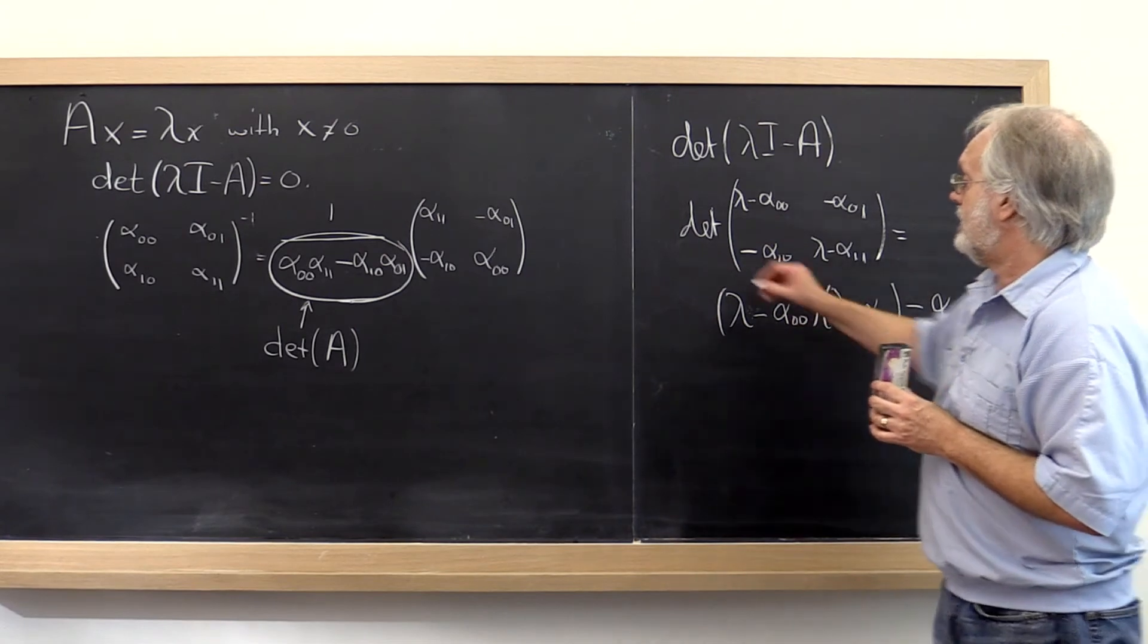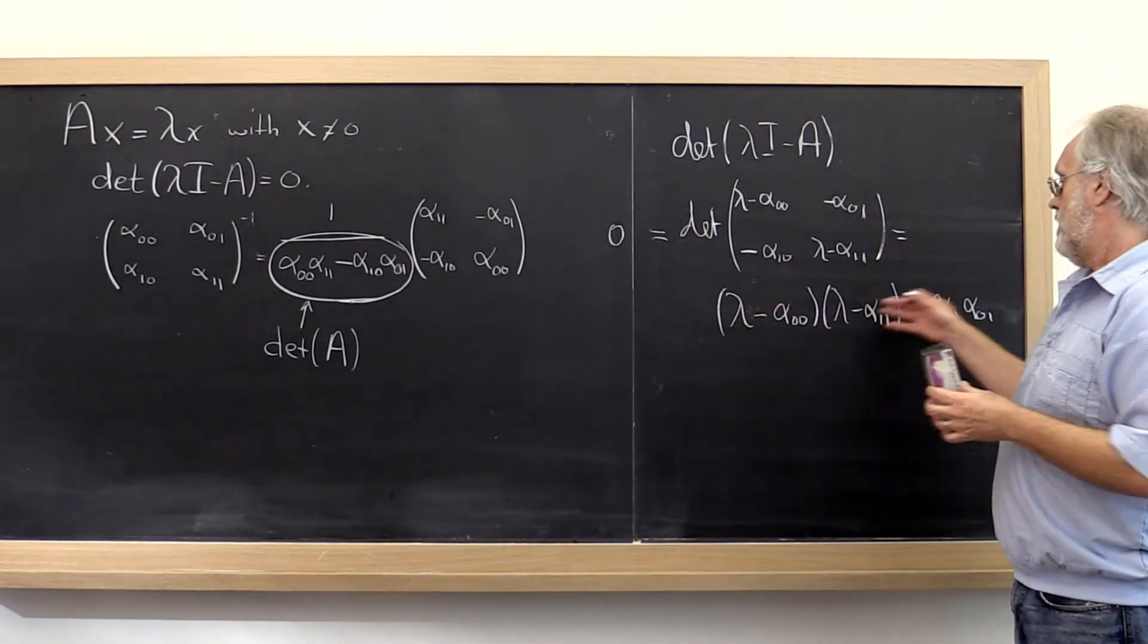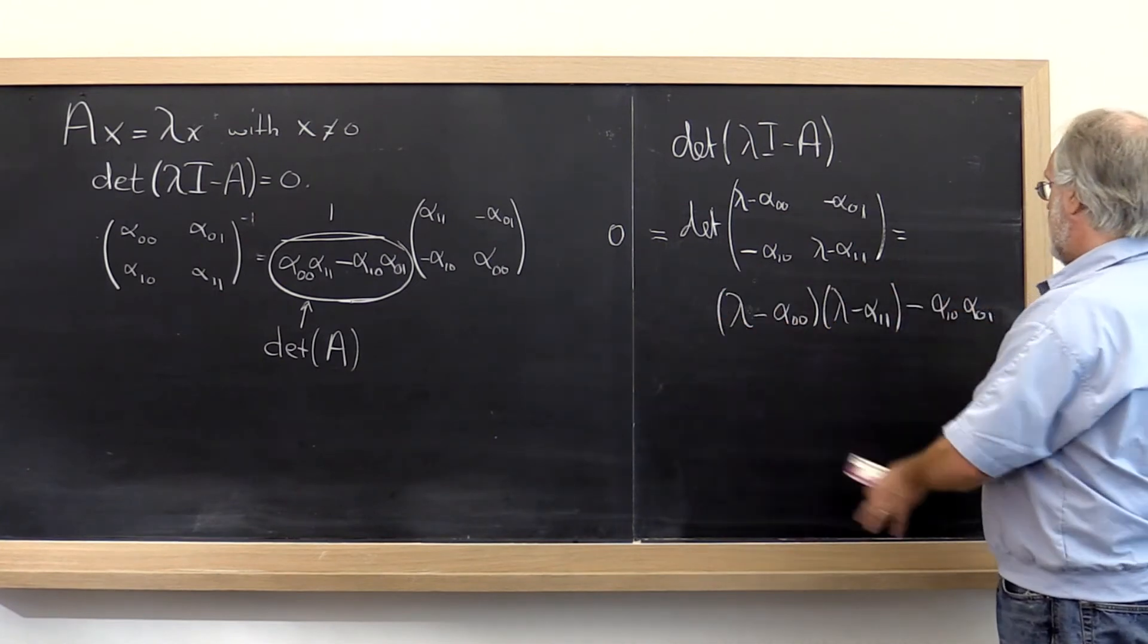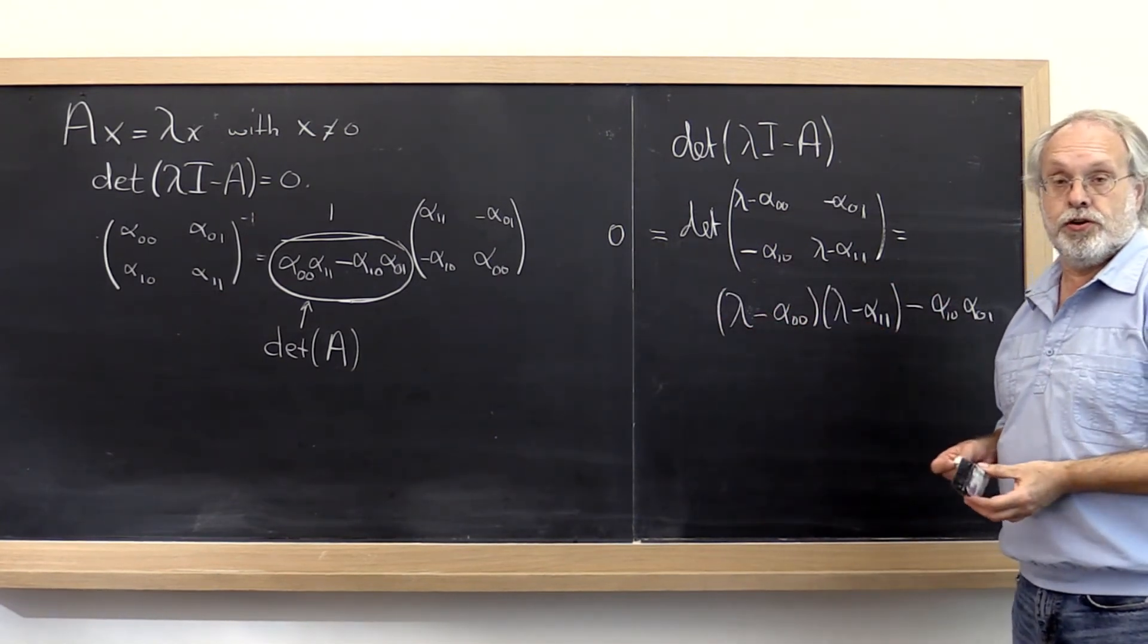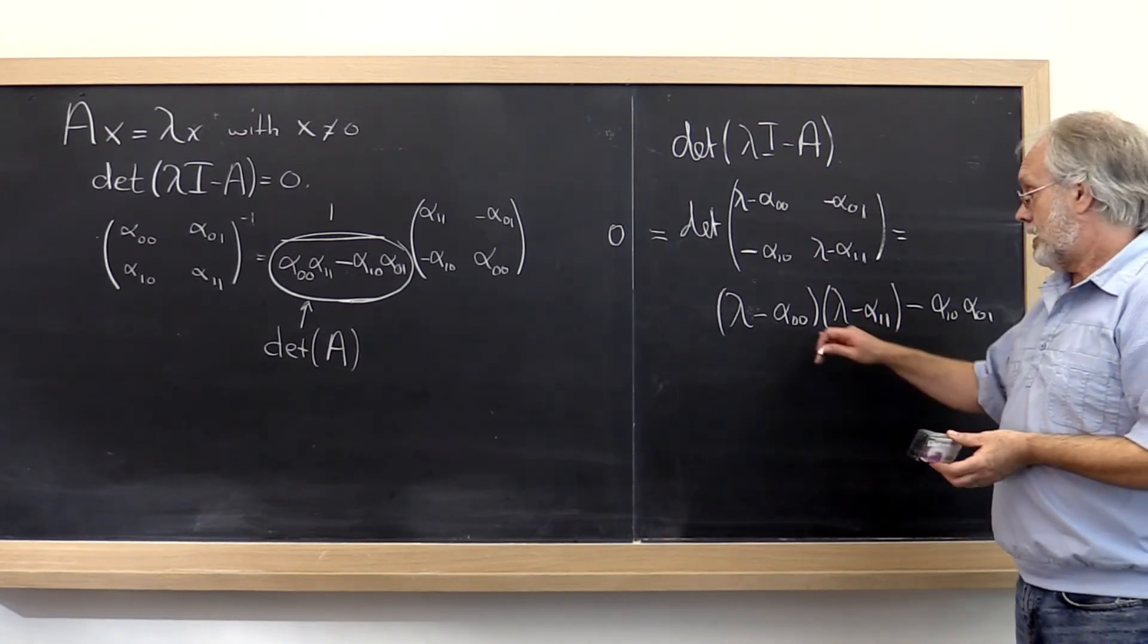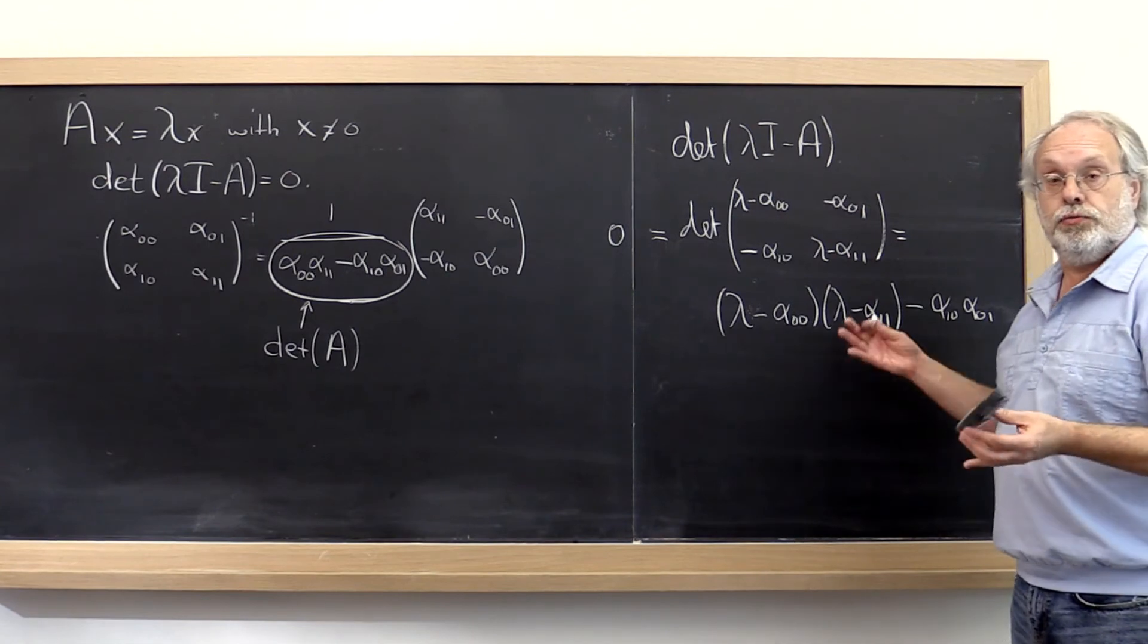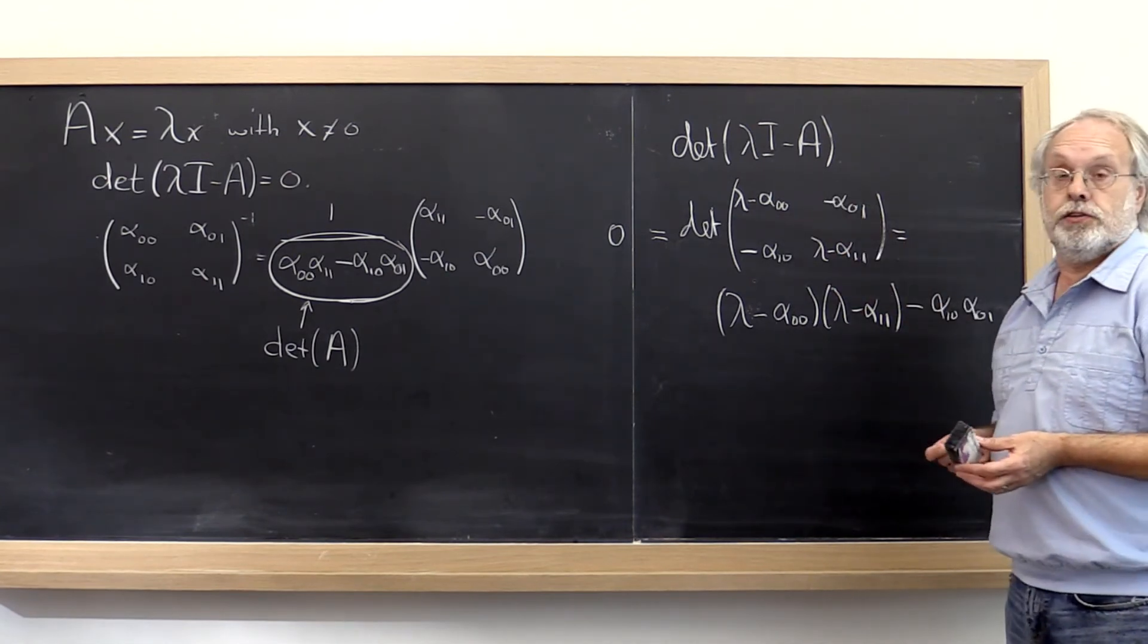And then we know that that determinant is equal to zero. So we can multiply all of this out and then use whatever method you prefer to compute the roots of a second-degree polynomial to find the roots. And those roots then are the eigenvalues of matrix A.